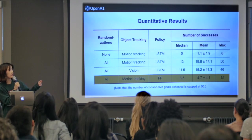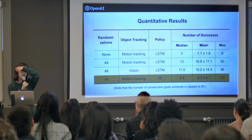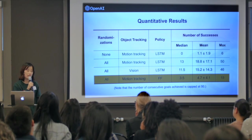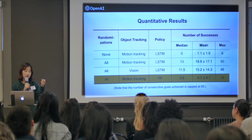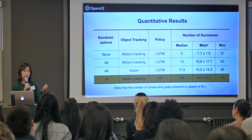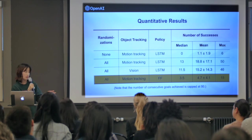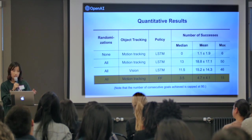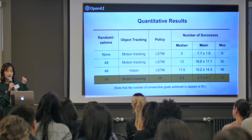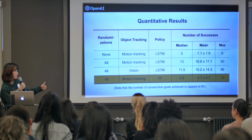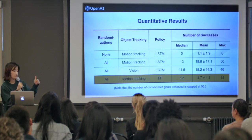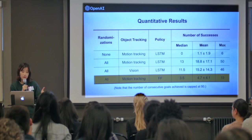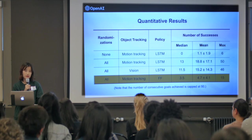One more interesting result: our policies use recurrent units — LSTM — with internal memories. We tested how important this memory is by replacing the LSTM policy with a feedforward network and deploying on the robot. The performance dropped a lot, which indicates that memory plays an important role in sim-to-real transfer. Potentially the policy is using memory to learn how to adapt.